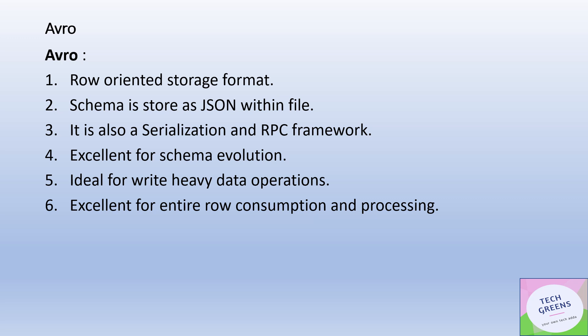Avro is a row-oriented storage format. In Avro, the schema is stored as a JSON file within the file along with the binary data, which makes schema evolution excellent with Avro file formats. As it's a row-oriented storage format, write operations are much more effective compared to read operations — that's why it's ideal for write-heavy data operation scenarios. It is excellent when we have to consume and process the entire row. Another highlight of Avro is that it is also a serialization and RPC framework, so it can be passed over the wire across different nodes in the cluster.